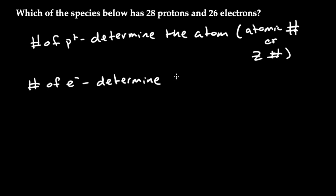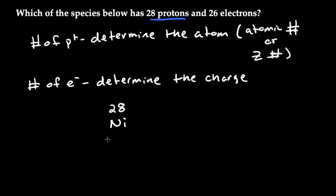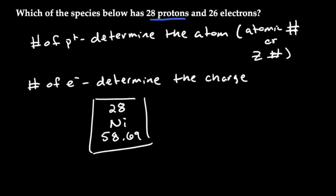So, the number of electrons determines the charge, and the number of protons determines the atom. If we look here and see that we've got 28 protons, we go to the periodic table to find which element has an atomic number of 28. When we do that, we see it's going to be Ni, or nickel. We've got 28 up top, then nickel for Ni, and then 58.69. This number is the number of protons.